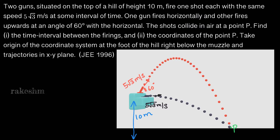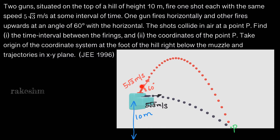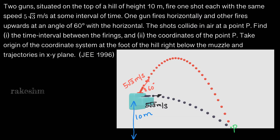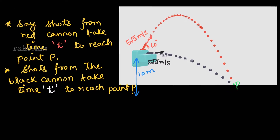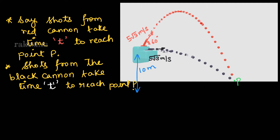We are asked to find the time interval between these firings. Looking at the schematic, we can see that one cannon started firing a little early and then after some time the other cannon fired. So the question is the time interval between the firings of both cannons. Let us say the shot from the red cannon takes time t to reach point P, and the shot from the black cannon takes time t' to reach point P. The coordinates of point P are x and y, and we take the coordinates of the cannon as the origin.